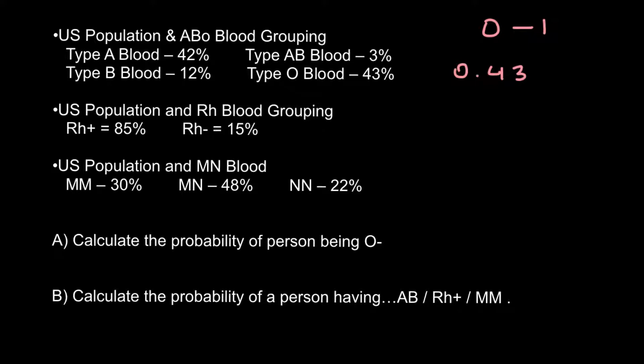RH negative at 15% equals 0.15. The probability of belonging to blood group O and at the same time being RH negative involves two independent probabilities — these genes reside on different chromosomes and are inherited independently with no linkage. So we are going to use the product rule and multiply these two probabilities.